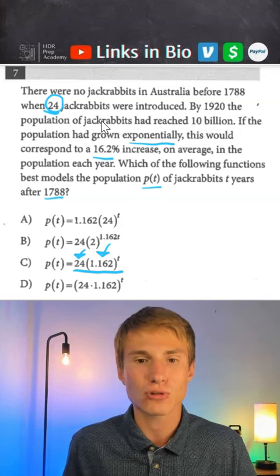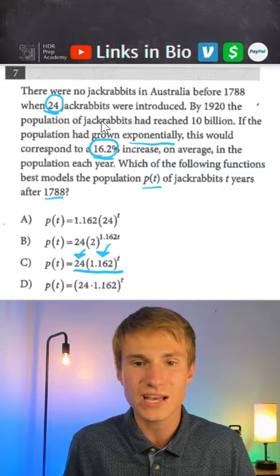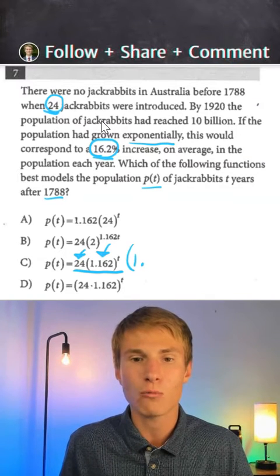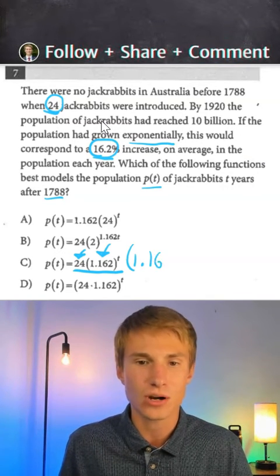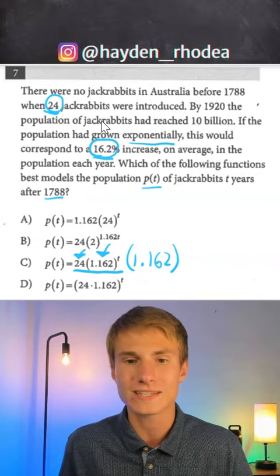Next, inside of these parentheses we need our growth factor, which we know is 16.2%, but we have to keep in mind that we have to have that one in front of it to account for the amount we started with. So we're going to have 1.162 in parentheses.